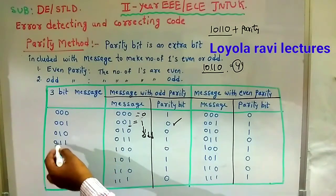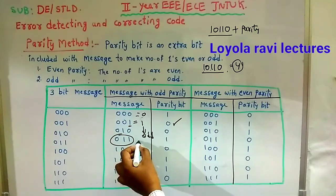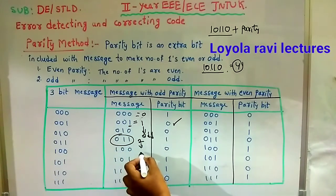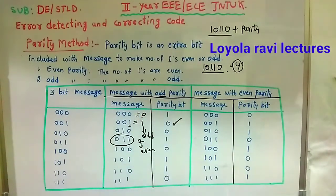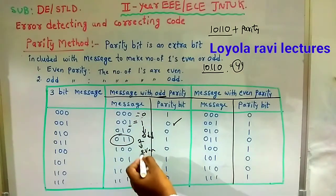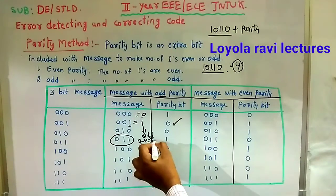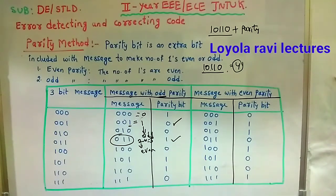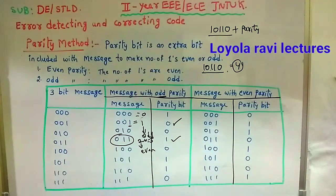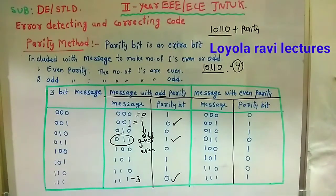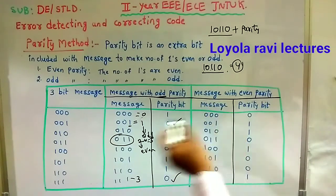Continuing odd parity: for message 011 — number of ones is 2, which is even, so we add a parity bit of 1 to make it 3 ones, which is odd. For message 111 — number of ones is 3, which is already odd, so parity is 0. If the message does not have an odd number of ones, make the parity bit 1. That is how odd parity works.